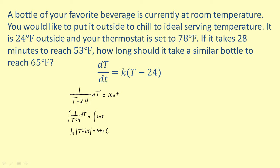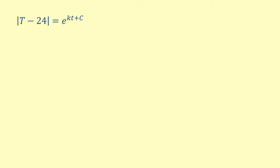Raising e to the power of both sides, we get the absolute value of capital T minus 24 equals e to the kt plus c. So we now have the absolute value of capital T minus 24.